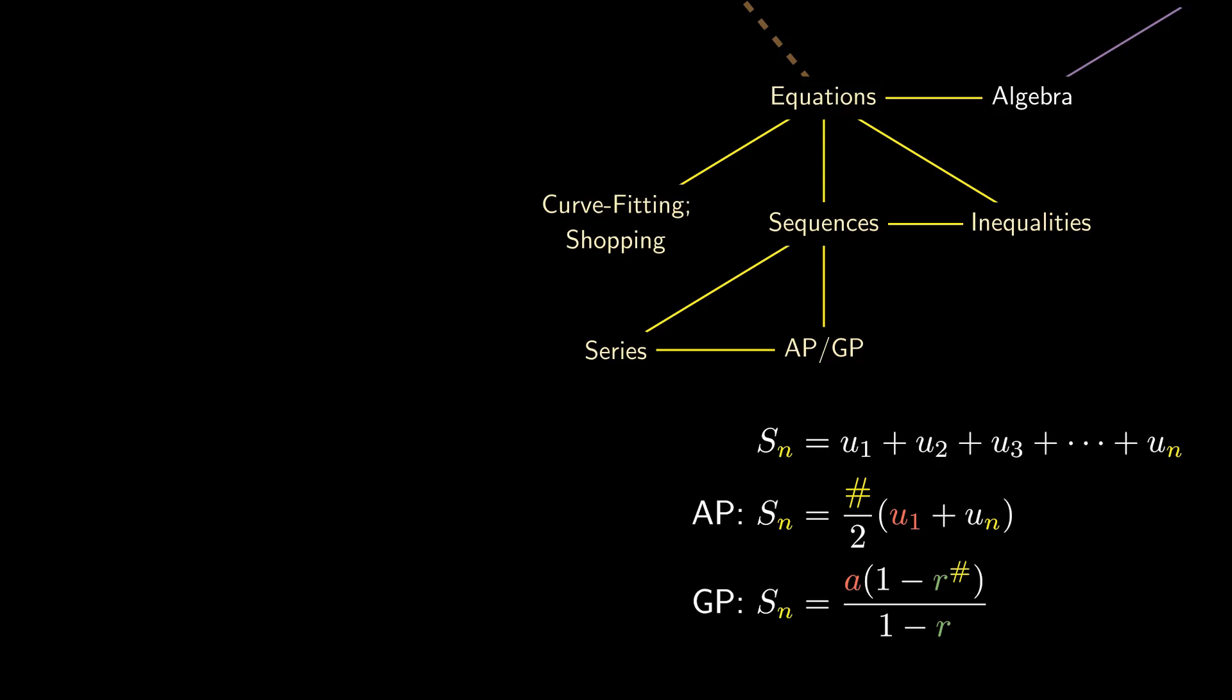A natural question of curiosity is taking an infinite sum. If this number exists, we call it the sum to infinity. For an arithmetic progression, there is no sum to infinity.